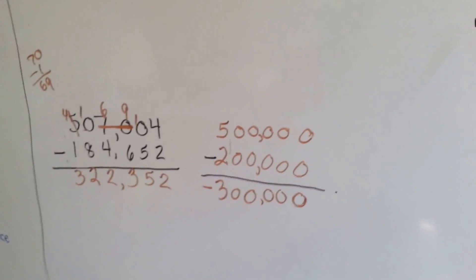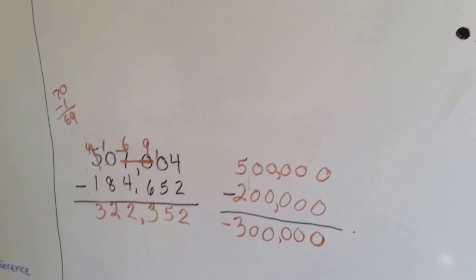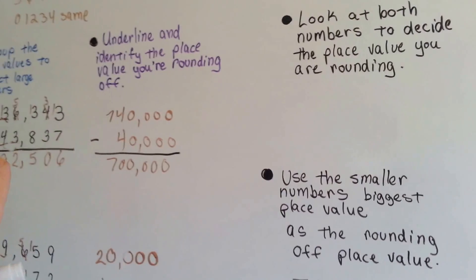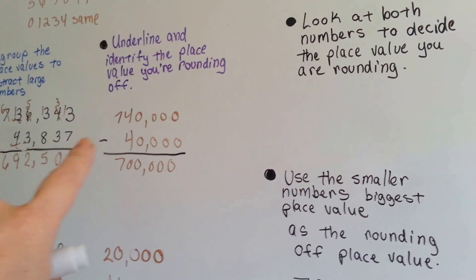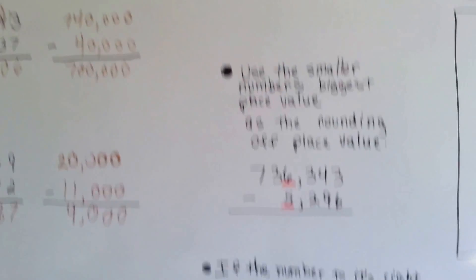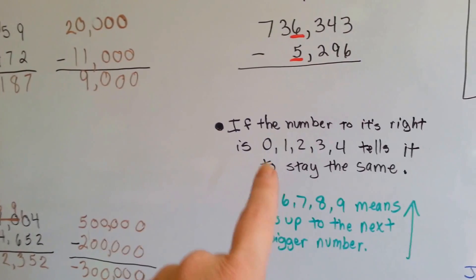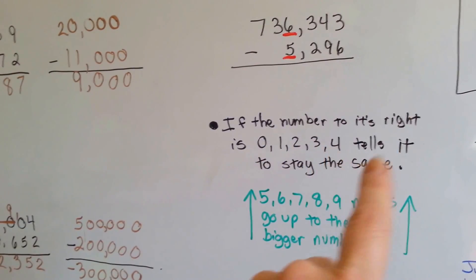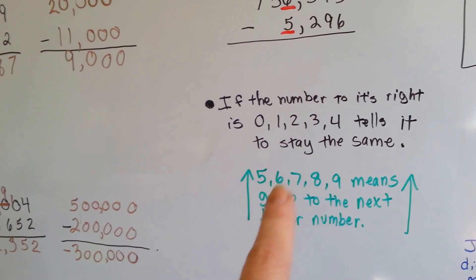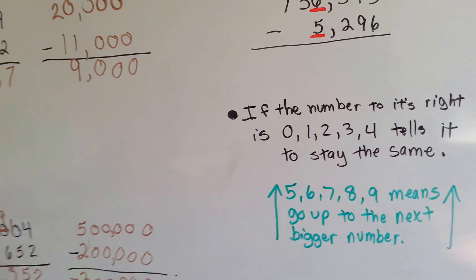All right. So, if you were counting hundreds of thousands of jelly beans in a jar, it's around 300,000 jelly beans in the jar. So, remember, you look at both numbers to decide the place value you're rounding and you use the smaller number, you use its largest place value. And remember, if the number to its right is a 0, 1, 2, 3, or 4, it tells the number to stay the same. If the number to the right is a 5, 6, 7, 8, or 9, it means to go up to the next biggest number. It tells the number to go up to the next biggest number.